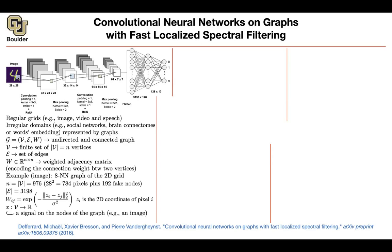For each pixel, you have a value. So for each node, you're going to have the corresponding intensity of that pixel — a number from zero to 255. Whatever you do, you have a signal on a graph. For instance, this could be an image. Your X, if you flatten it out, is going to be a vector in R^n, where n is the number of nodes in your graph. Each element of that vector is the value at that node — so these are your pixel values.